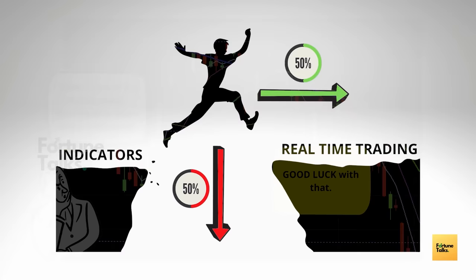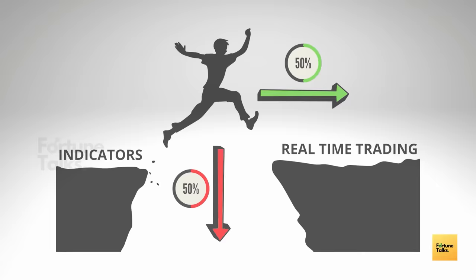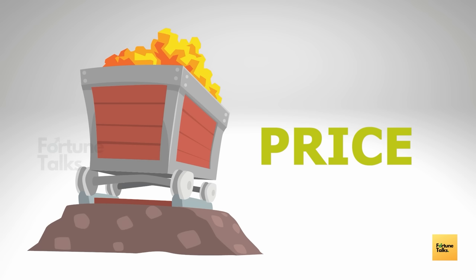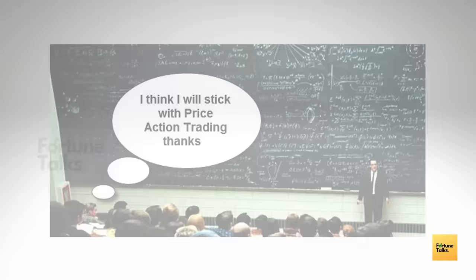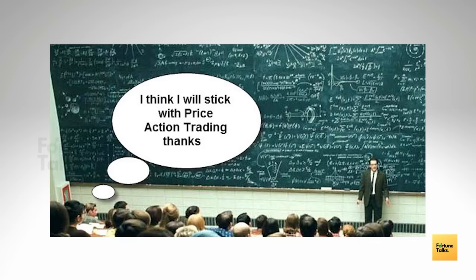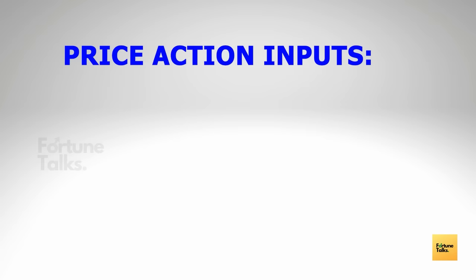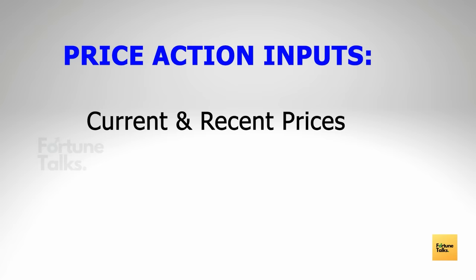I'm not concluding that technical analysis is bad or that indicators are useless. Instead, what we have to understand is that we have a gold mine by the name of price, which if studied properly can help us identify what the market is doing. This study of price and its behavior is known as price action. Unlike indicators, fundamentals, or algorithms, price action tells you what the market is doing — not what you think the market should do. Price action focuses mainly on recent and current prices, the overall market trend, and the price structure of the market.